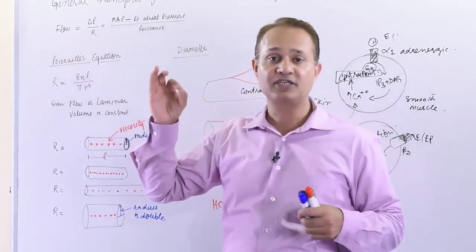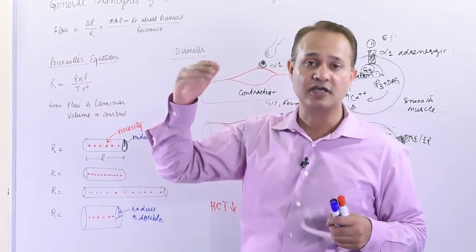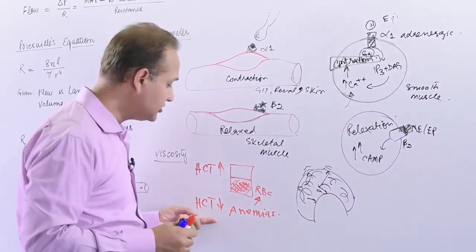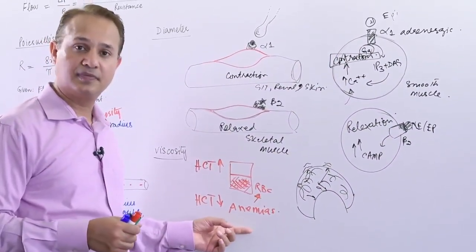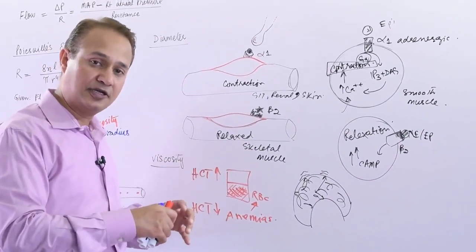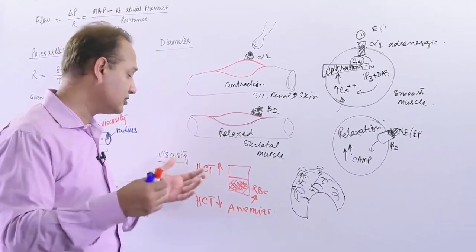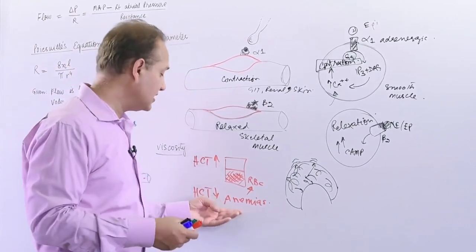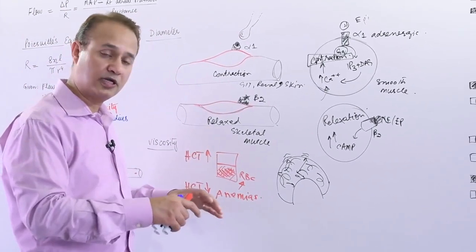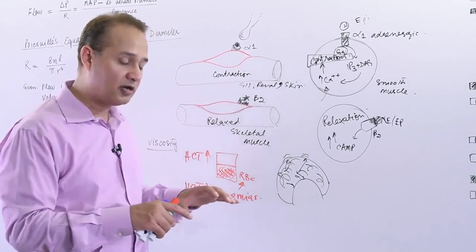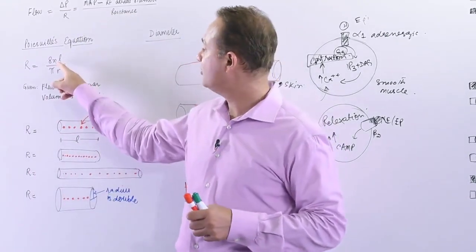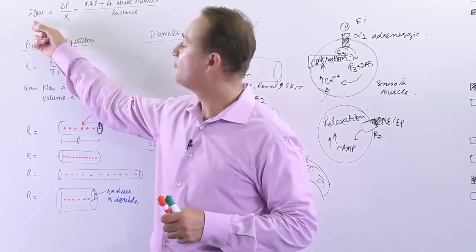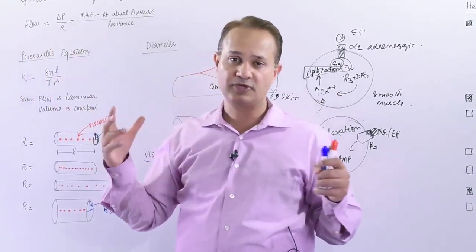How about reducing the hematocrit? Anemias—if the number of RBCs is reduced because of anemias of various types, or if the patient has a problem with the proteins, the result is that the hematocrit would go down. When hematocrit goes down, the viscosity will reduce, that would mean resistance will reduce, that means flow would increase.